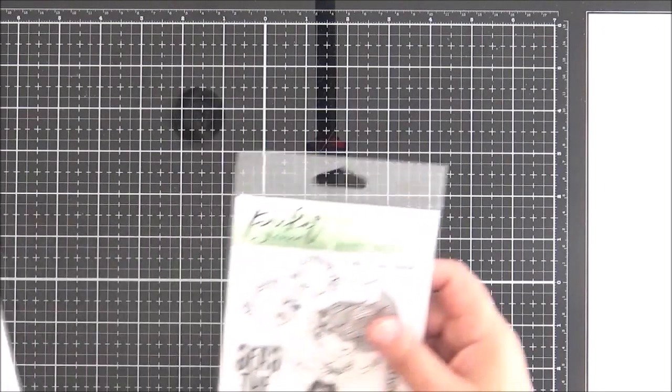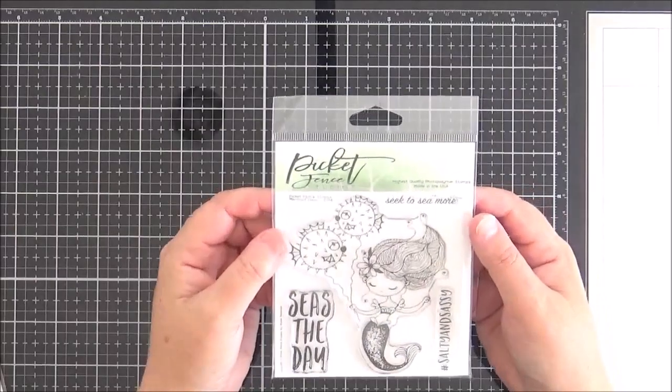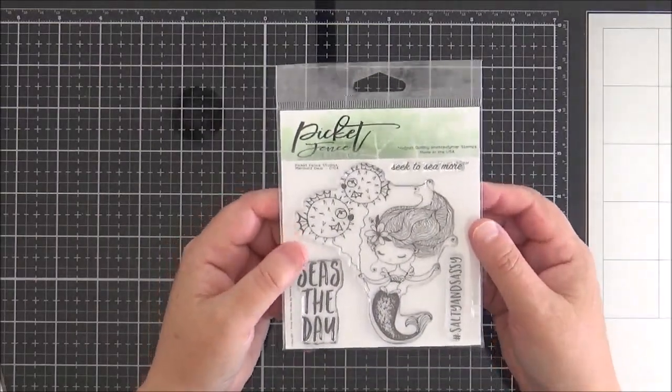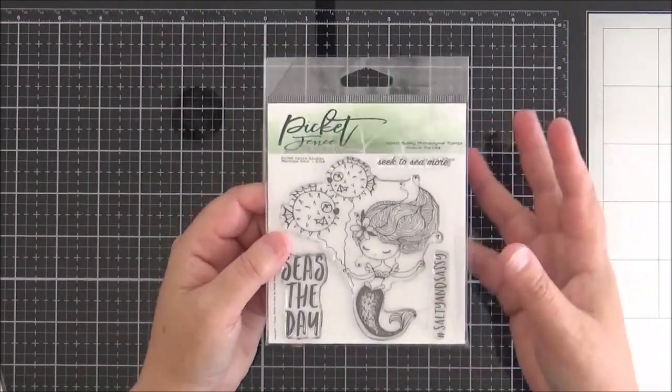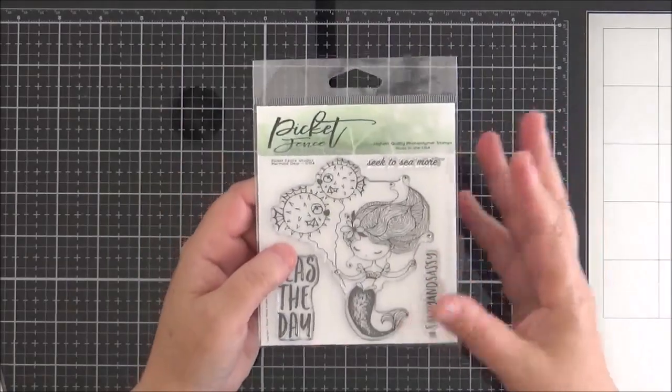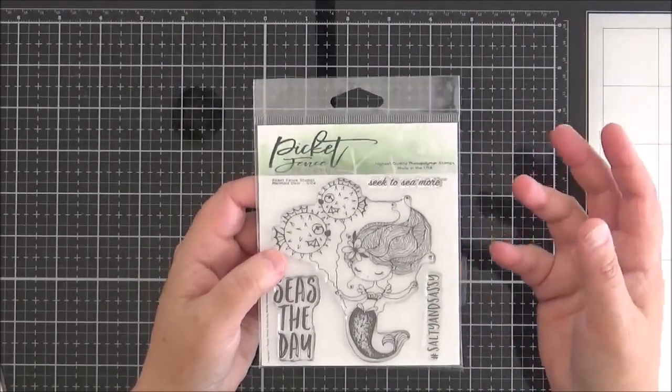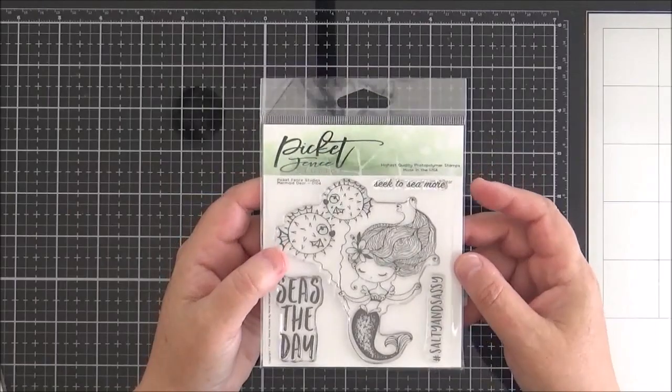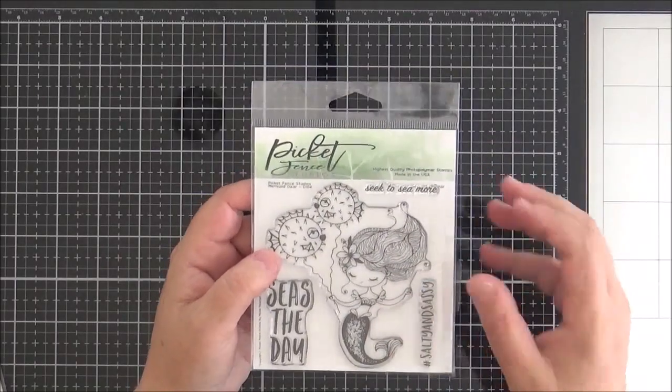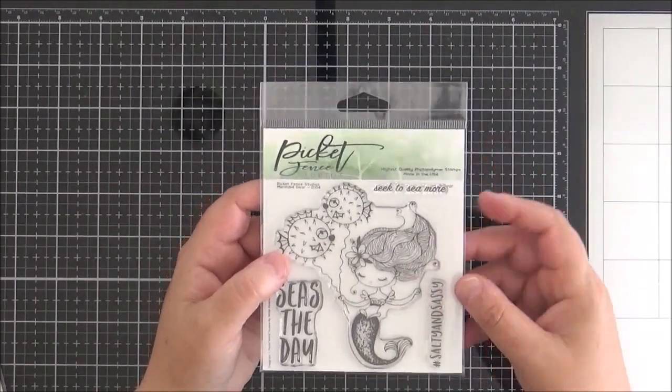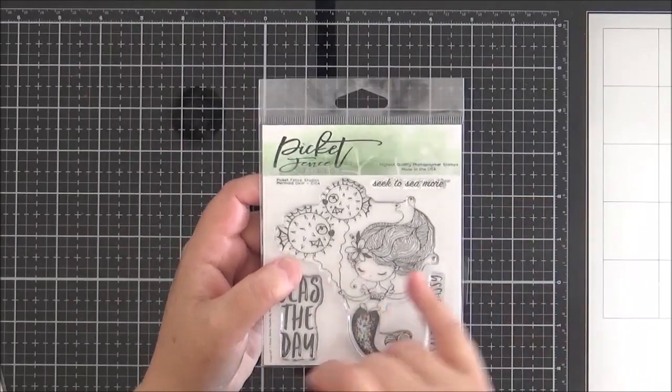First up, I've got this set here. This is called Mermaid Deer. She is part of a range of similar products. There's one called Artist Deer. There's another one called Your Friend Deer. They're quite whimsical, these images. I really love them. I love the style of them. She's got a little flower in her hair.